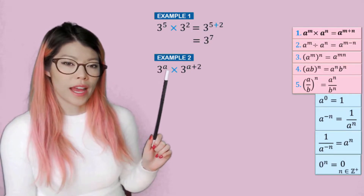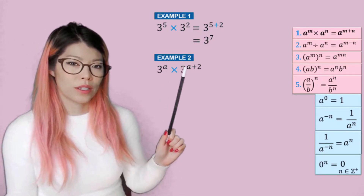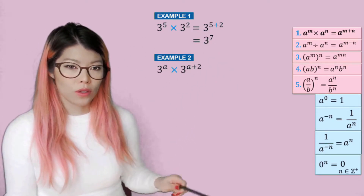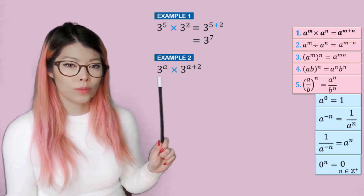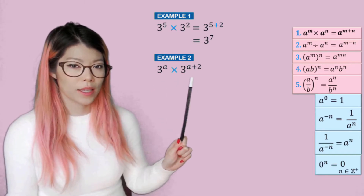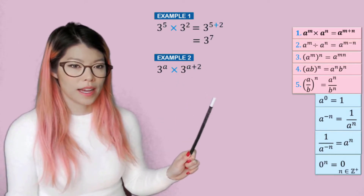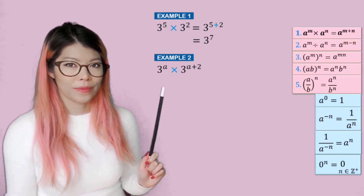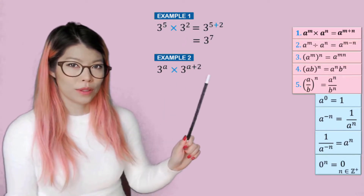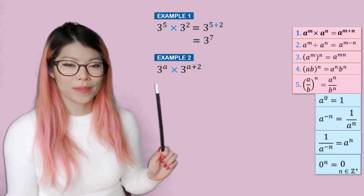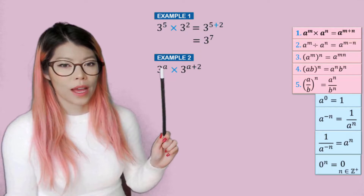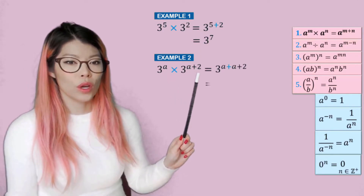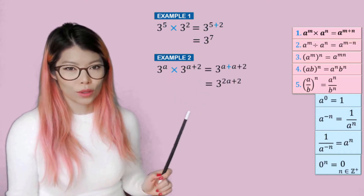Example two: three to the a times three to the a plus two. Remember, throughout this whole video, you can always pause when I get to this point and write down your own answers and see if they match. So unpause to see if they match. So now we add the powers: a plus a plus two, which is two a plus two.